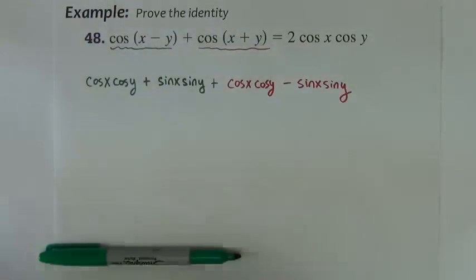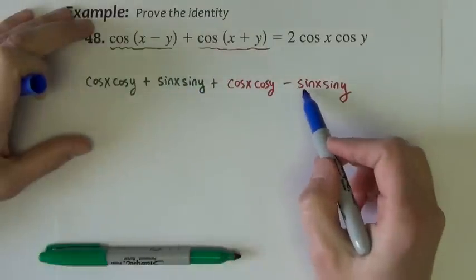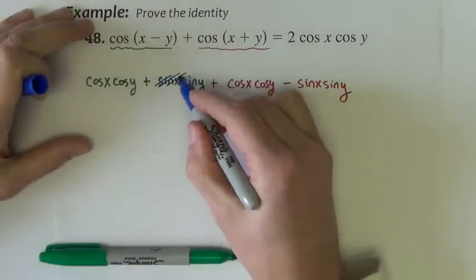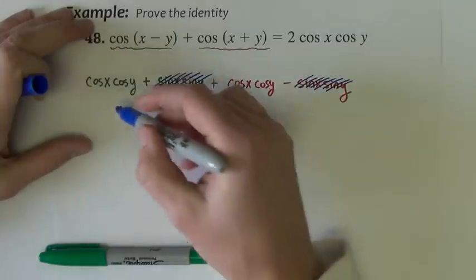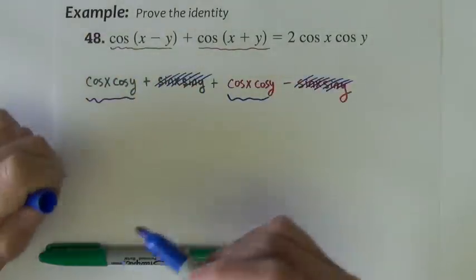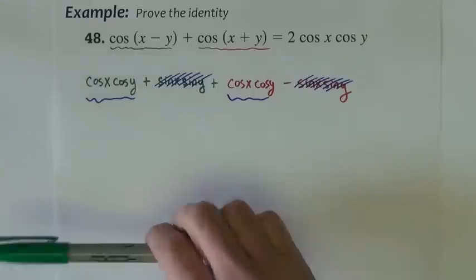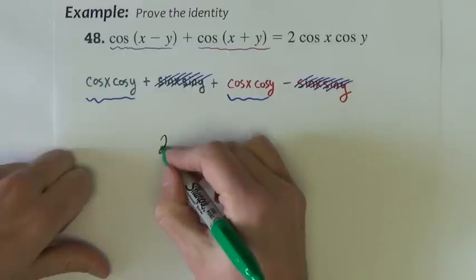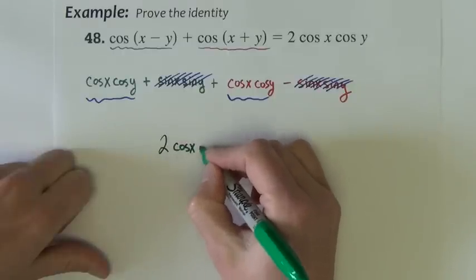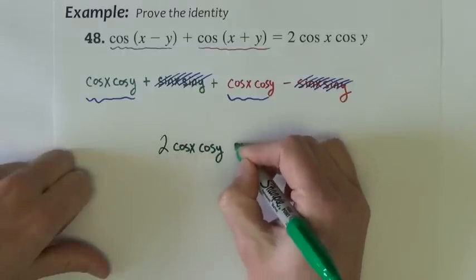Looking for like terms, we have sine x sine y and negative sine x sine y. Those two terms add to zero. These two terms are like terms. There is one here and one here. Those two ones add to 2. Cosine x cosine y.